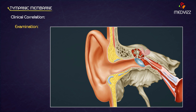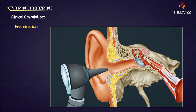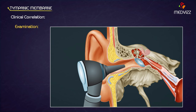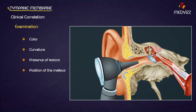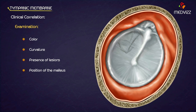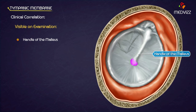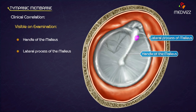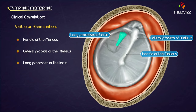Clinical correlation. Examination of the tympanic membrane with an otoscope provides significant information about the condition of the middle ear. The color, curvature, presence of lesions, and position of the malleus are features of significance. When the tympanic membrane is illuminated, a cone of light is reflected in the anterior inferior quadrant from the umbo, which marks the attachment of the handle of the malleus. Since the membrane is semi-translucent, the following structures lying deep to it are visible: the handle of the malleus as a yellow streak extending from the umbo upwards and forwards; the lateral process of the malleus as a white prominence in the upper part of the streak; and the long process of the incus as white streaks behind and parallel to the upper part of the handle of the malleus. A cone of light appears at the 5 o'clock position in the anterior inferior quadrant.